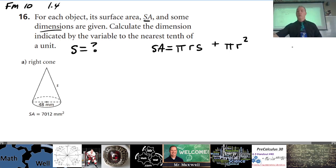that's the surface area formula for a cone. We are given the surface area right here. Pi is a constant, we always know pi. We can determine r, that is half of this diameter that's given, so r is 24 millimeters. And s is what we're trying to find, so we're given everything except for s.